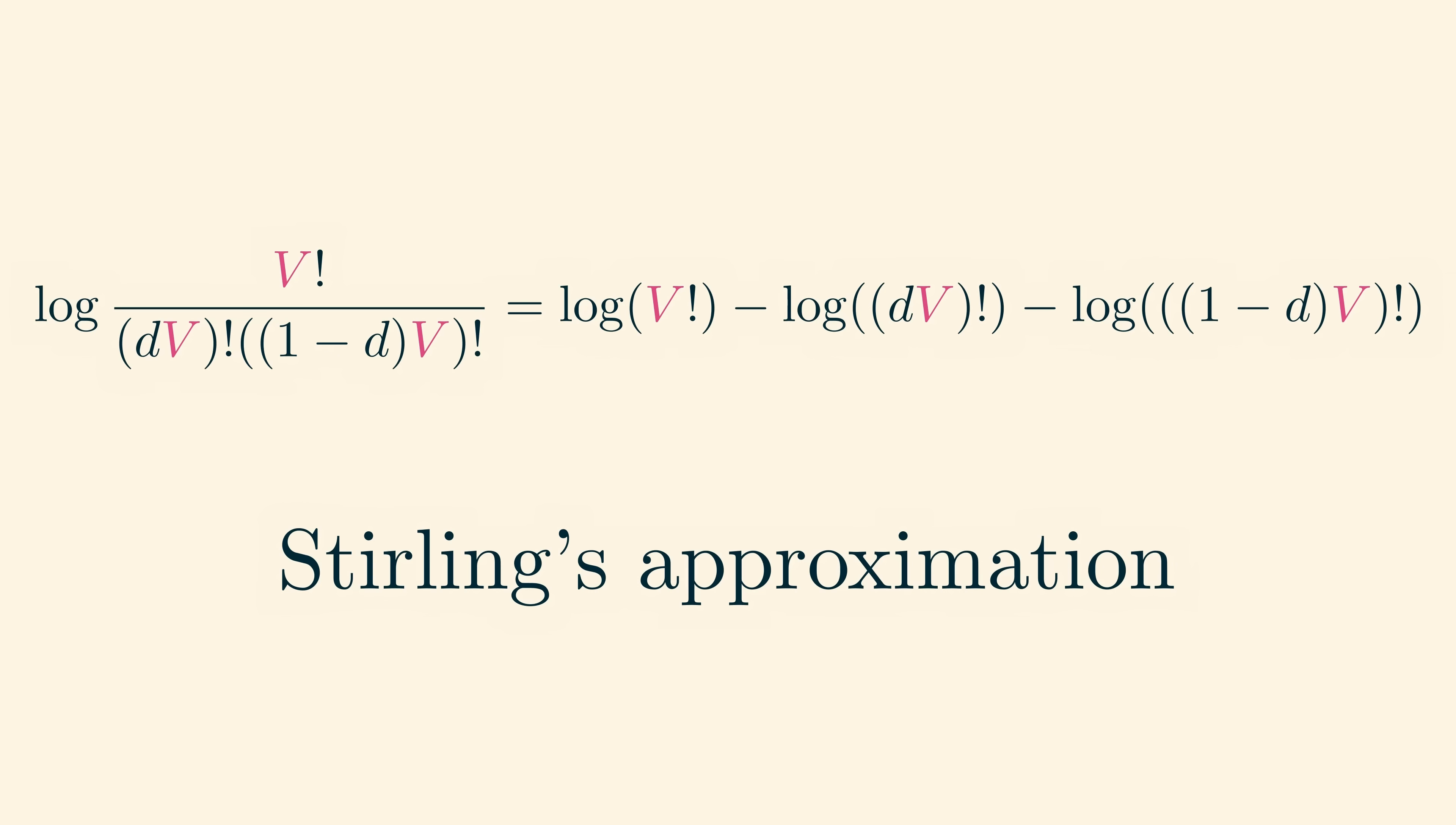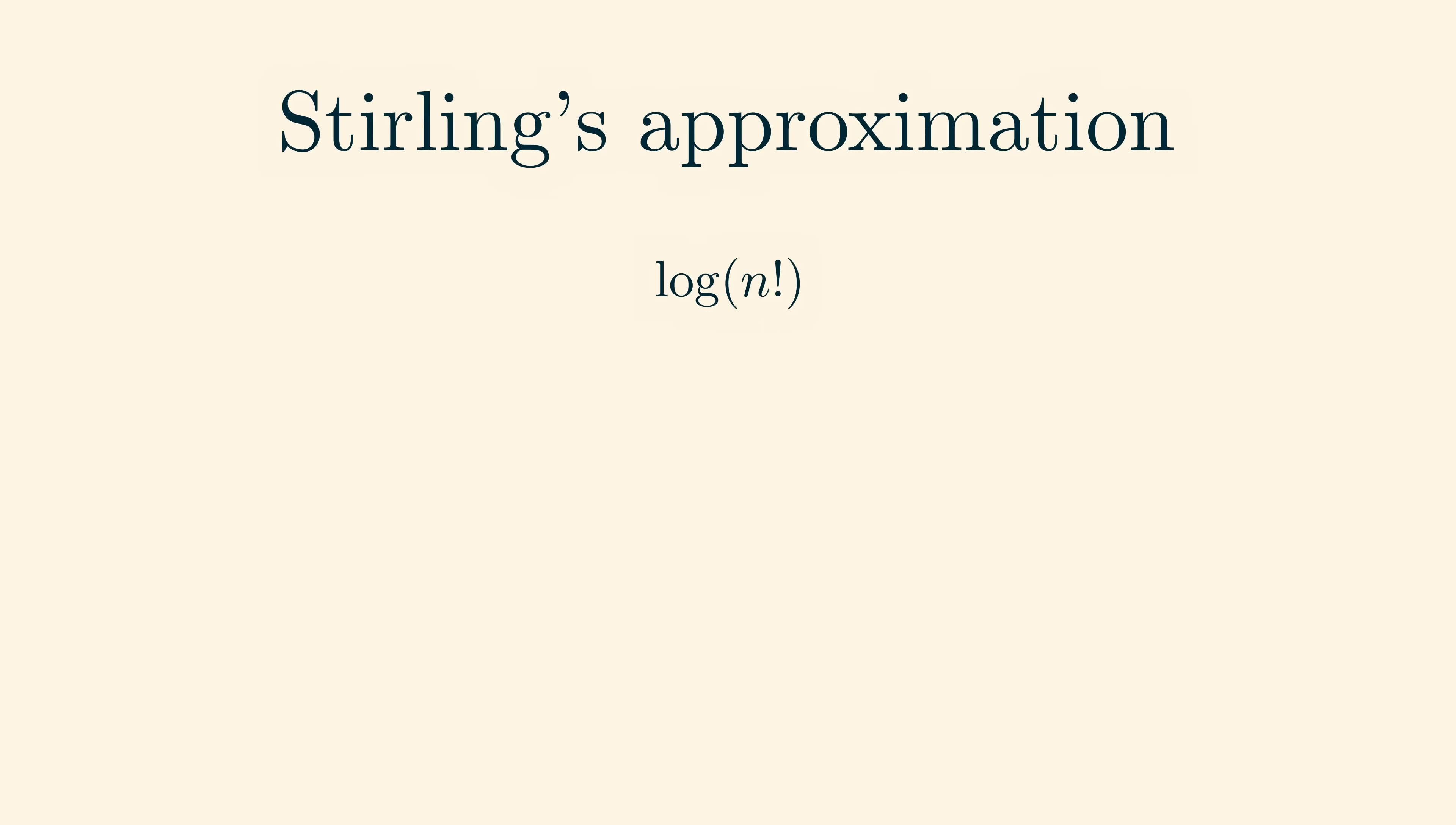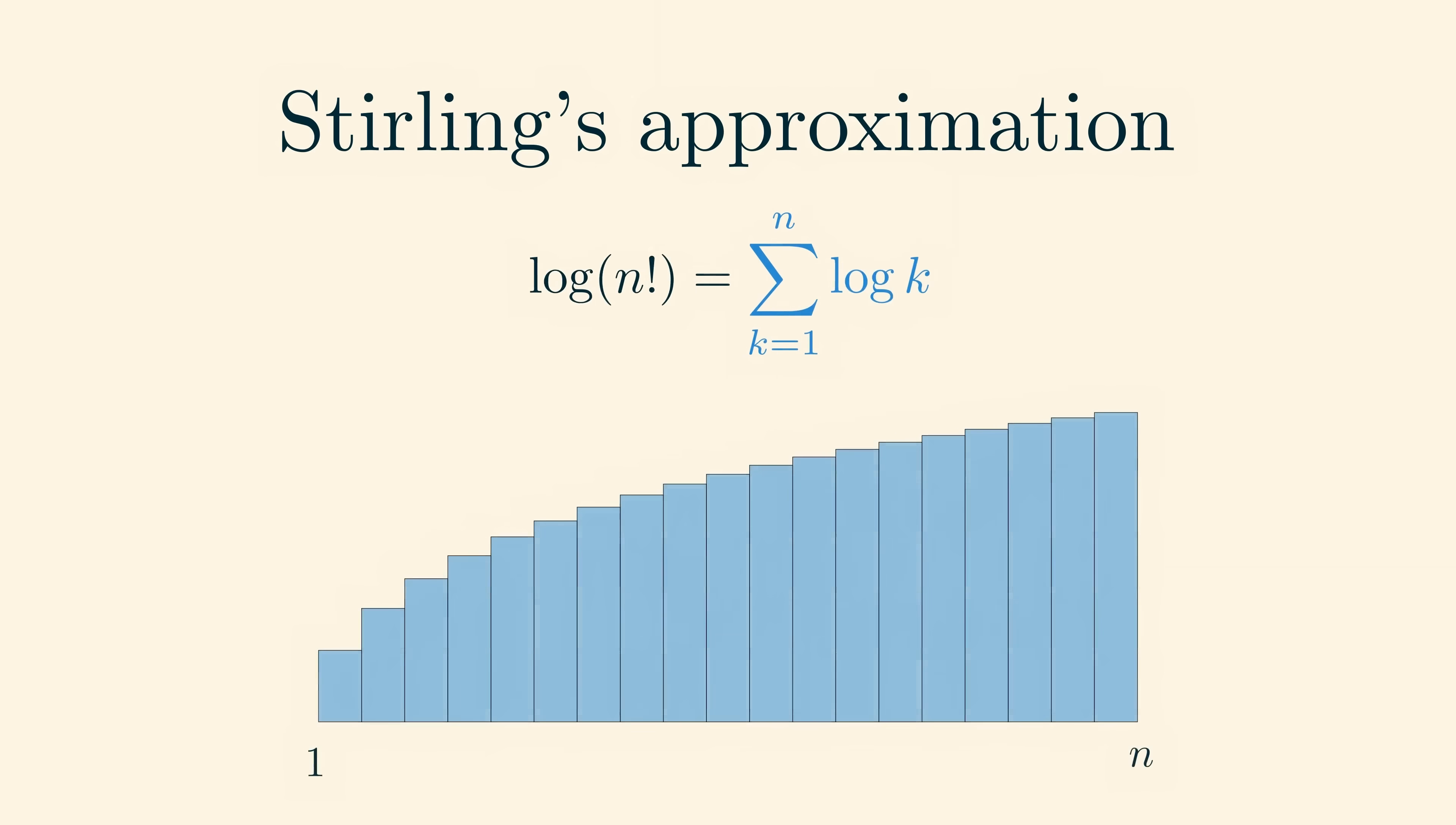Now for a number n, what is the log of n factorial? Well, n factorial is the product of the numbers k going from 1 to n, and so the log of n factorial is the sum of log k for k going from 1 to n. This is well approximated by the integral of log x, where x goes from 1 to n. The integral of log x is x log x minus x, and so the value of this integral is n log n minus n plus 1.